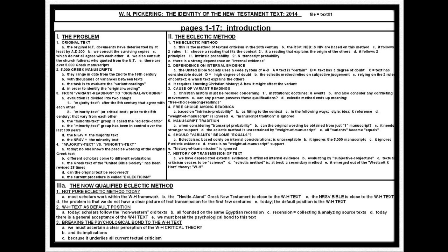It requires knowing Christian history and how it might affect the variant. Christian history must be recalled concerning institutions, doctrines, and events, and any conflicting movements must be considered. The author asks: can any one person possess all these qualifications? The Eclectic method ends up meaning free choice among readings, based on intrinsic probability — how does it fit the context with regard to style, idea, and reference. The author states that weight of manuscript is ignored and manuscript tradition is ignored.